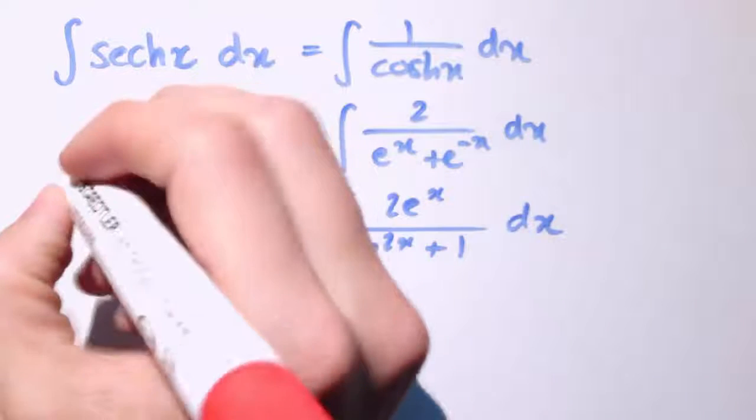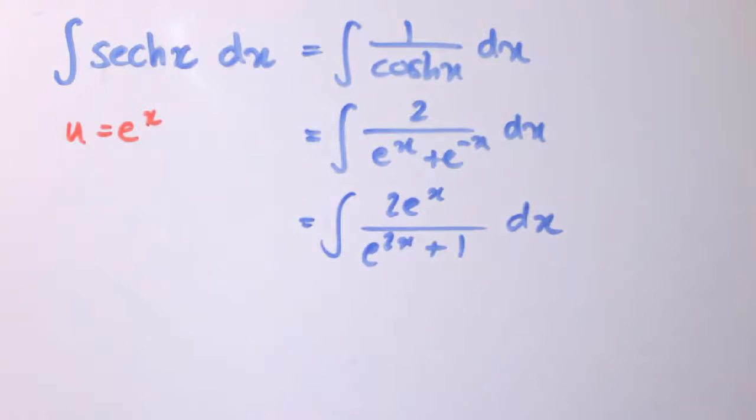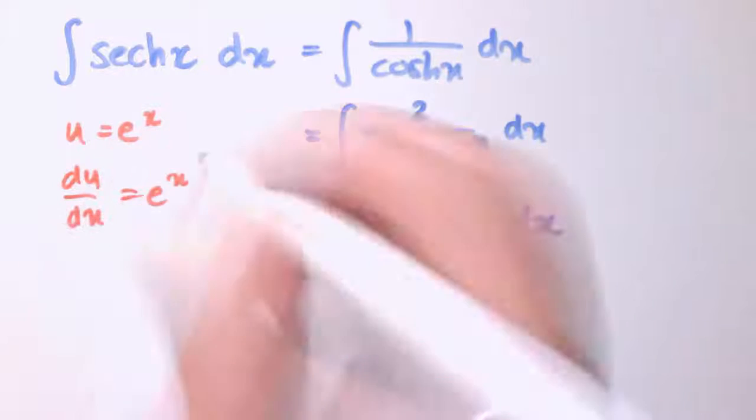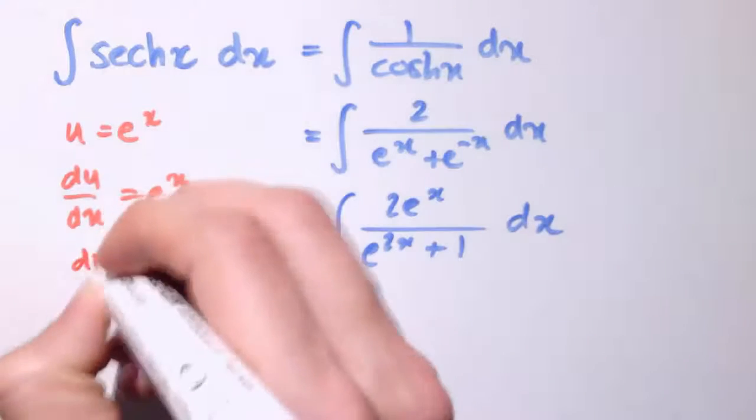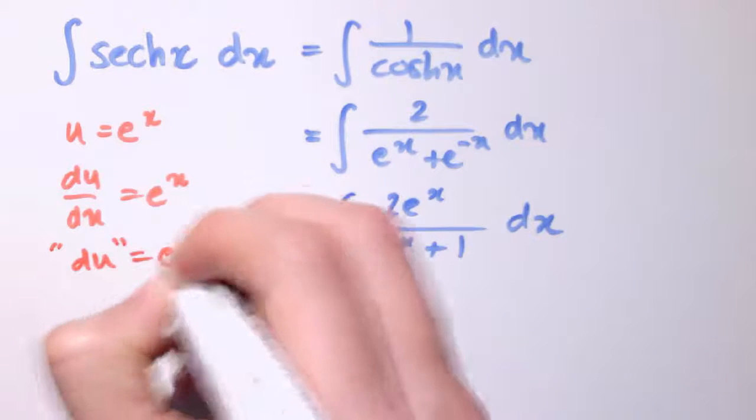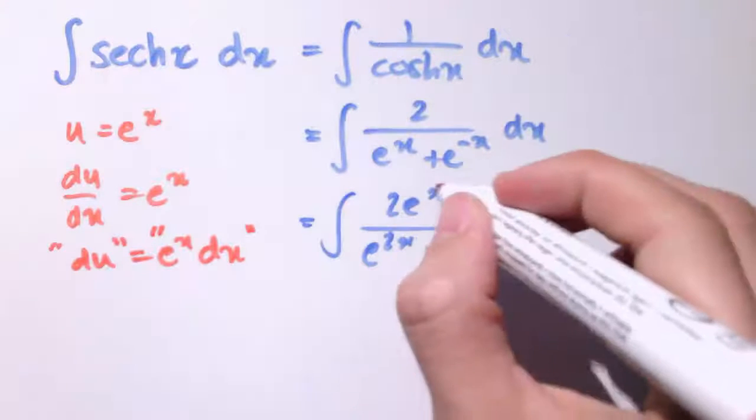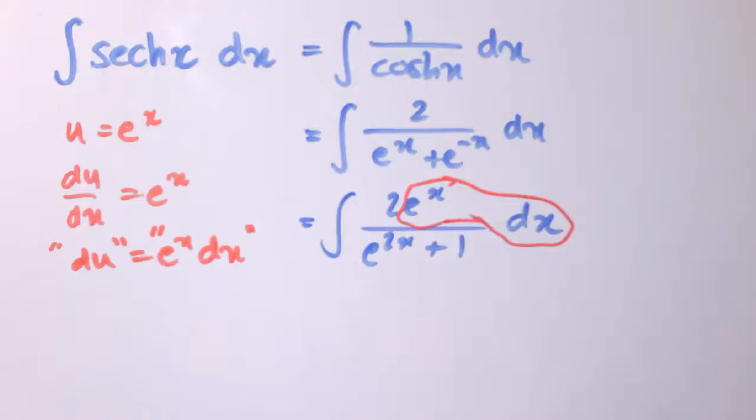So if we were to substitute u equals e^x into here, then we'd have also du/dx is e^x. So that means that du, if you like, is e^x dx.